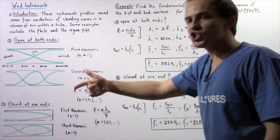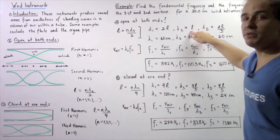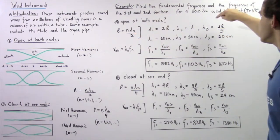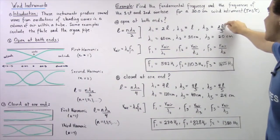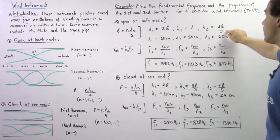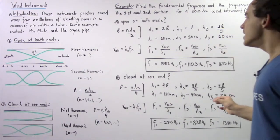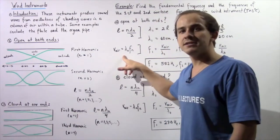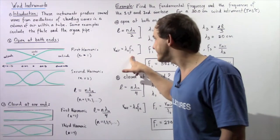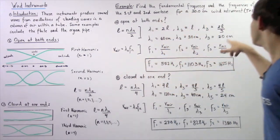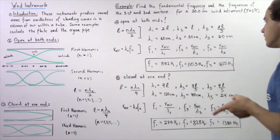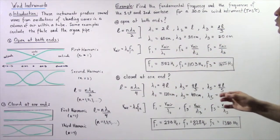Since L is 30 centimeters, lambda-1 equals 60 centimeters. Moving to the first overtone (second harmonic), lambda-2 equals L, so 30 centimeters. The second overtone (third harmonic) gives lambda-3 equals 2L divided by 3, which is 60 divided by 3, giving 20 centimeters. To calculate frequencies, we recall that the velocity of air equals wavelength times frequency, and the velocity of air at 0 degrees Celsius is 331 meters per second.